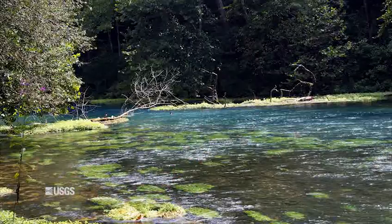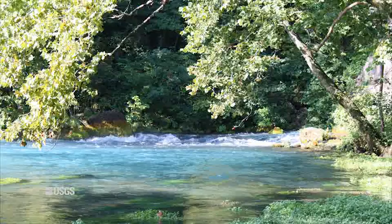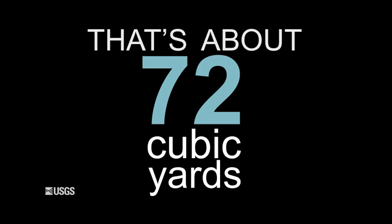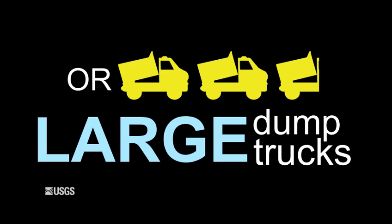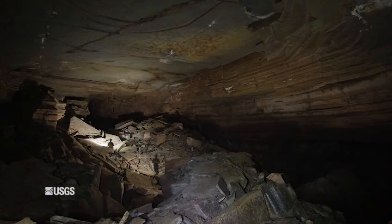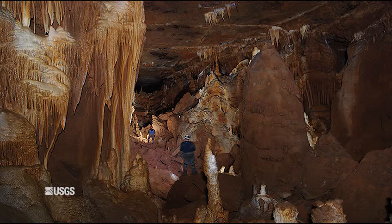One USGS study by Imes and others estimated about 173 tons of rock were dissolved by water flowing out of Big Spring each day — that's about 72 cubic yards, or 2.5 large dump trucks. This rock dissolved by groundwater can result in caverns beneath the land surface. In other instances, when enough rock is removed to create an unstable condition above the cavern, the overlying rock will collapse, forming a sinkhole.